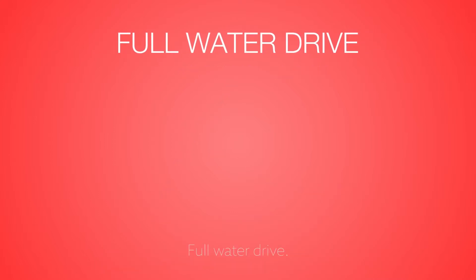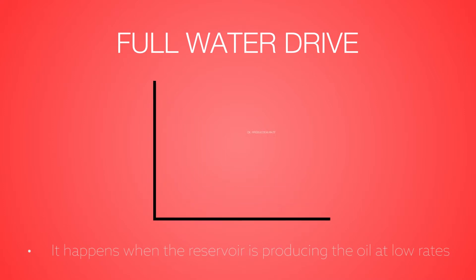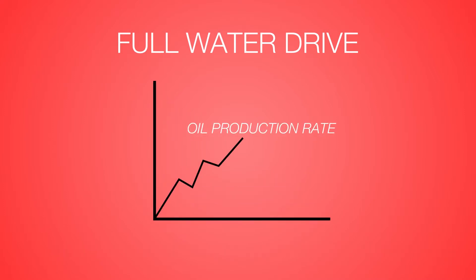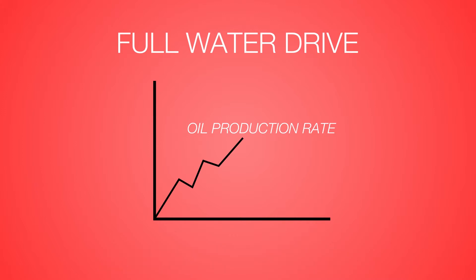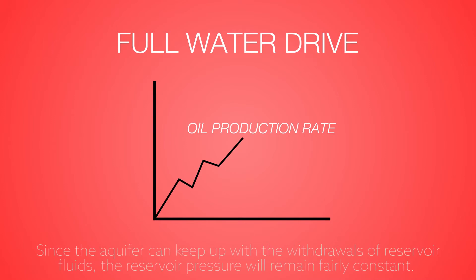Full water drive happens when the reservoir is producing oil at low rates, so the water expansion from the aquifer is able to replace the fluid volumes produced. Since the aquifer can keep up with the withdrawals of reservoir fluids, the reservoir pressure will remain fairly constant.